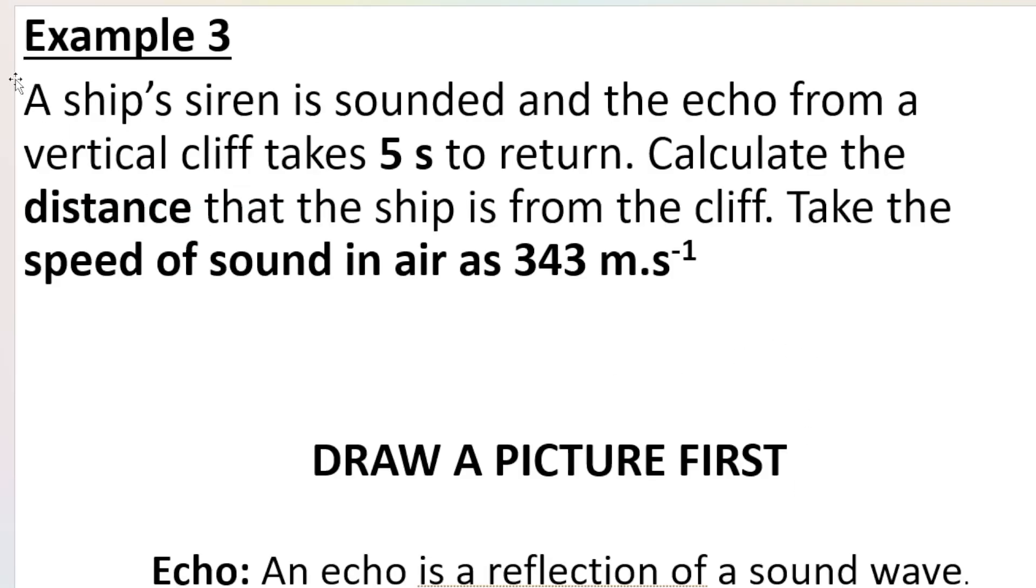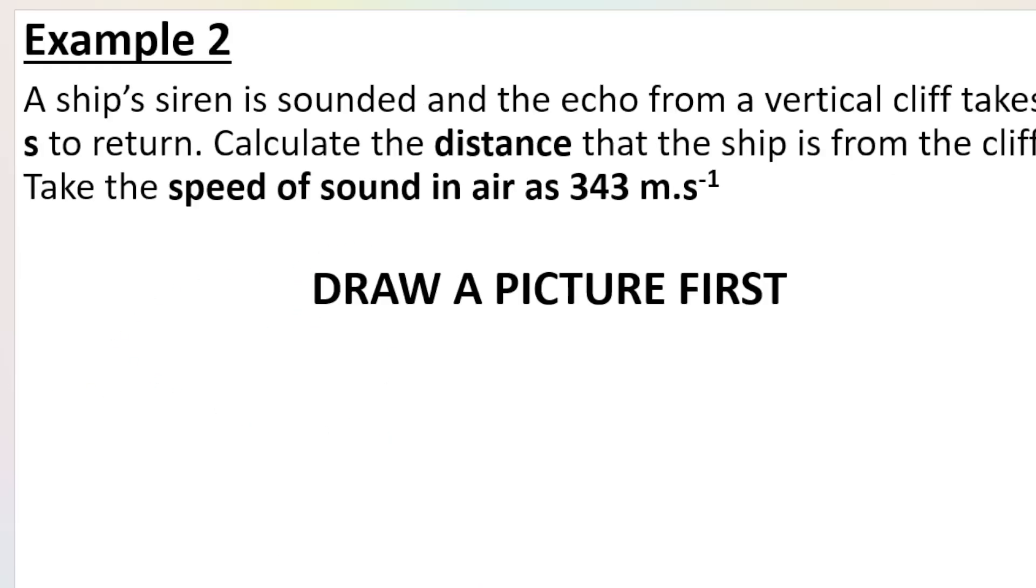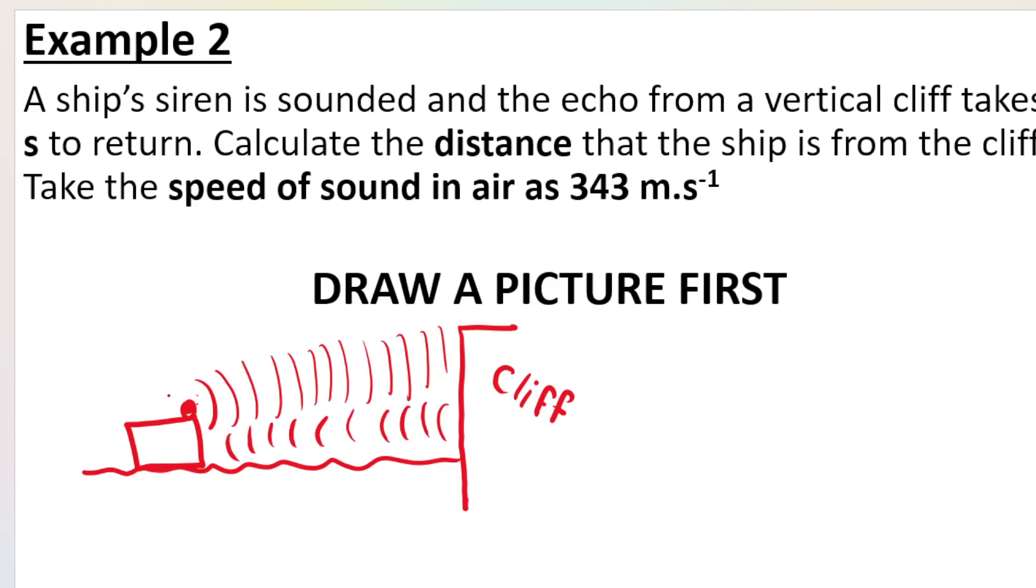In this example, we've got a ship's siren is sounded and the echo from a vertical cliff takes five seconds to return. Calculate the distance that the ship is from the cliff and they tell you the speed of sound in air. So I said you'd draw a picture first. It's not always necessary, but it may be helpful. We've got a ship on the water and here's the cliff. The ship's siren sounds a sound wave. It's going to travel in all directions, hit the cliff and then reflect back. The sound wave takes time to go there, and assuming that the ship is not moving, it's going to take the exact amount of time to return.